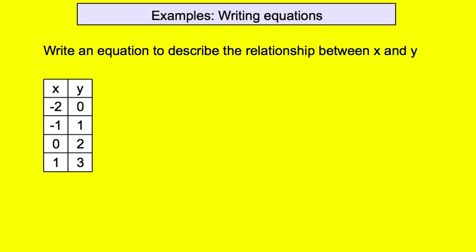Let's launch into the example here — this is the example for writing an equation. What we're going to do is start off with the x and y table where you already have all of the information. Later on, you're going to have an x and y table with no information on it and you're going to have to put the information on it. But this one, the x and y information is already on there. So what we have to do is figure out from the x to the y, what happened — it's either adding something or subtracting something.